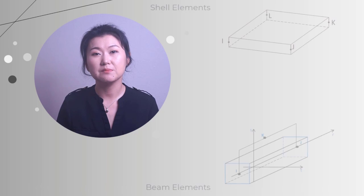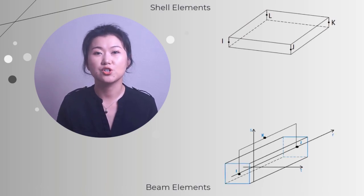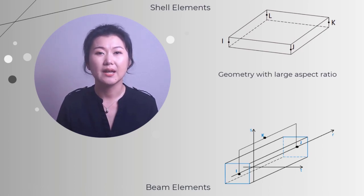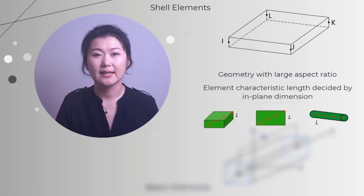Besides solid elements, there are also shell and beam elements, which are suitable for geometries with a large aspect ratio in dimension. One thing to note is that, for shell and beam, element characteristic length is decided by in-plane size, not the thickness.